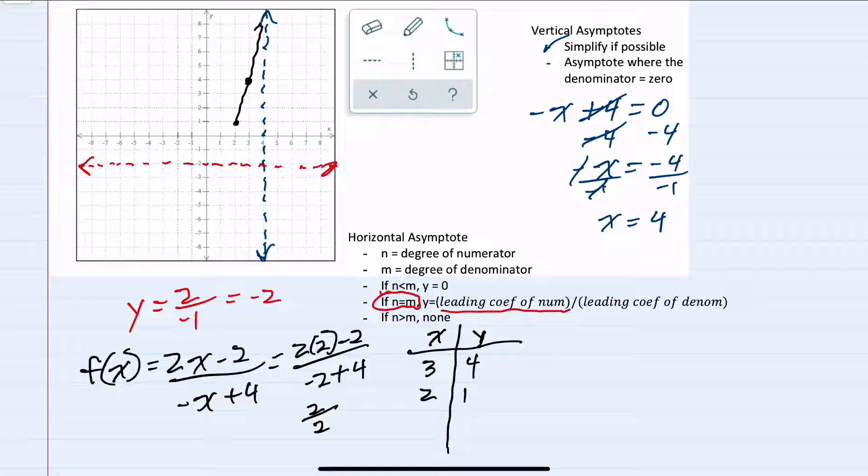So now we can connect these, knowing that we have these asymptotes that the line will get close to but not cross, gives us this sort of shape.